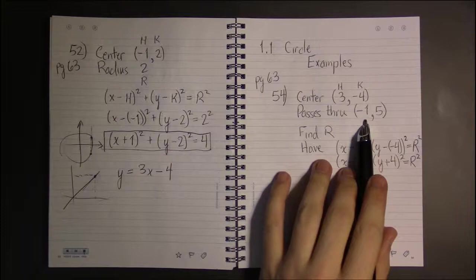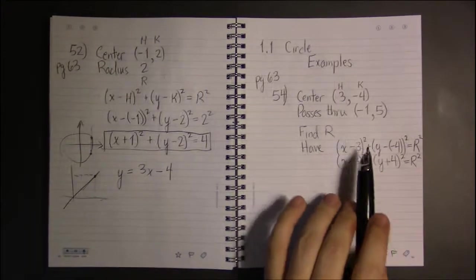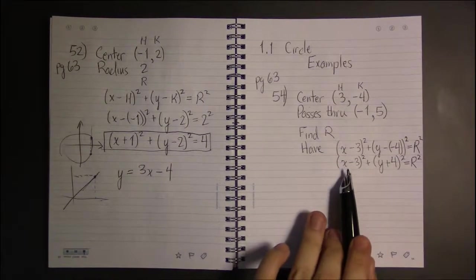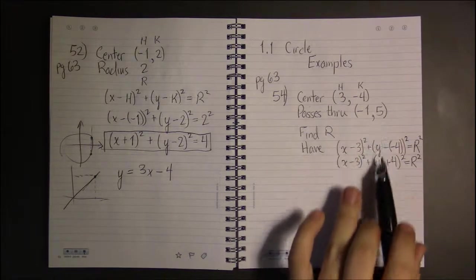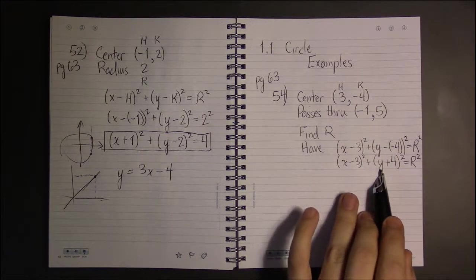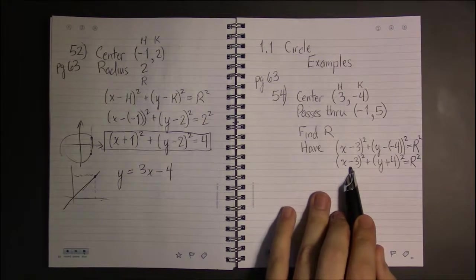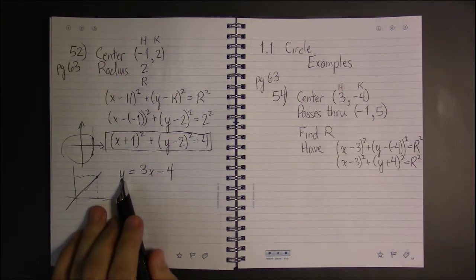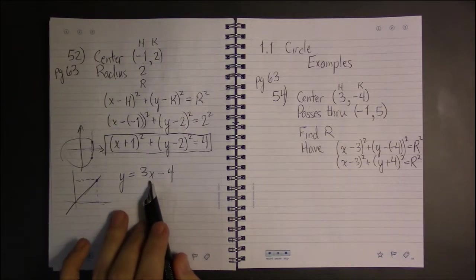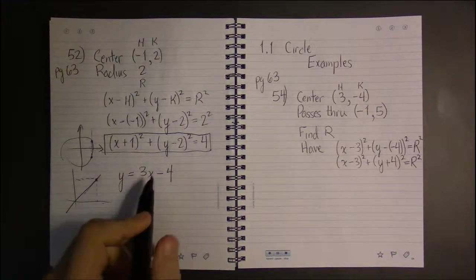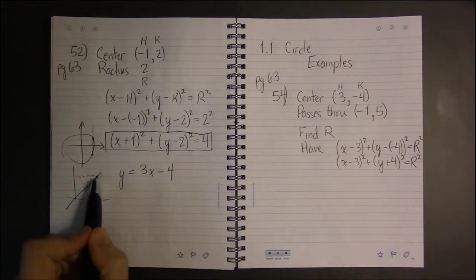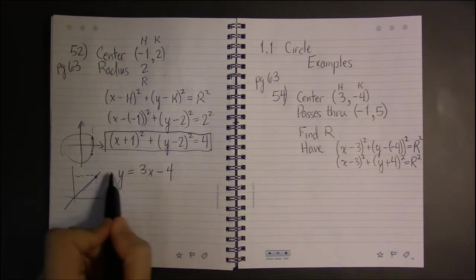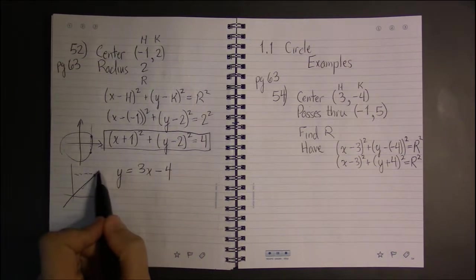Just like in the case of a line, if you plug in a point on the line, the X coordinate and Y coordinate for a point on the line, the left and right hand side should be equal.